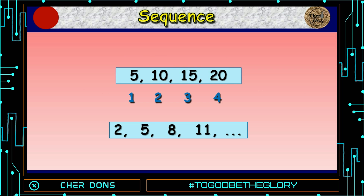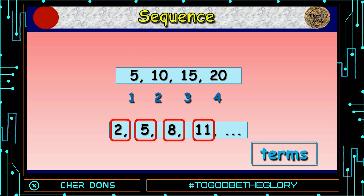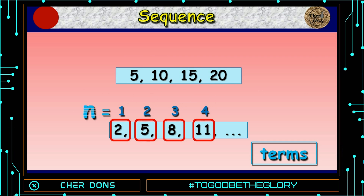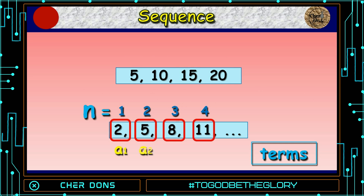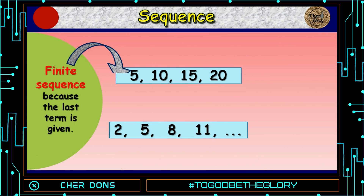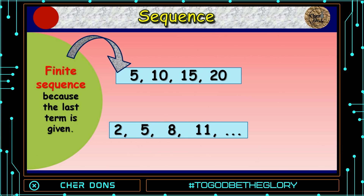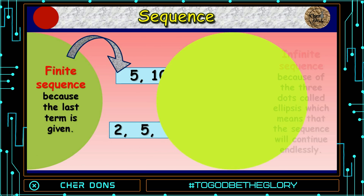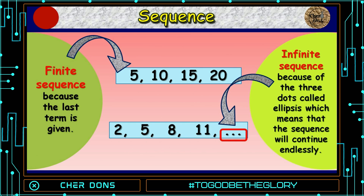For the second given sequence: 2, 5, 8, 11, and so on — those are the terms in the sequence. The order or number of terms is denoted by N. So, 2 is your A sub 1, 5 is A sub 2, 8 is A sub 3, 11 is A sub 4, and so on. The first sequence is called finite sequence, because the last term is given. While the second one is called infinite sequence, because of the three dots called ellipses, which means the sequence will continue endlessly.